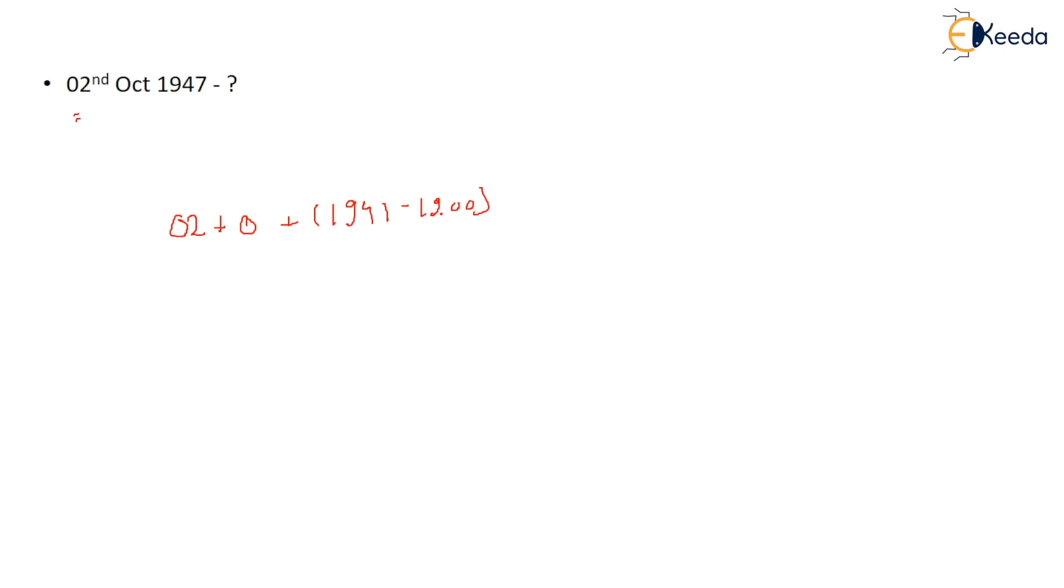And number of leap years: 47 divided by 4, how many leap years? 11 leap years. 12 is not counted.